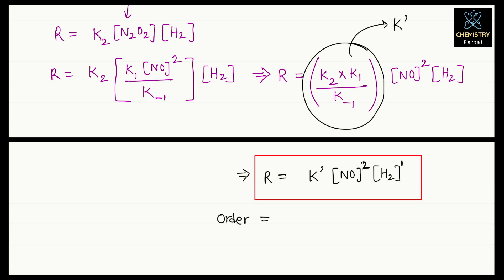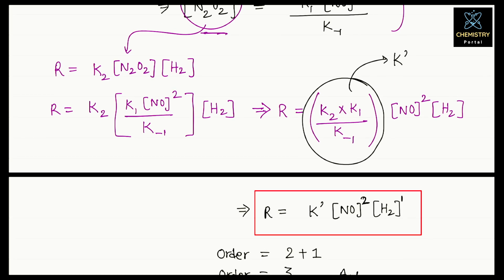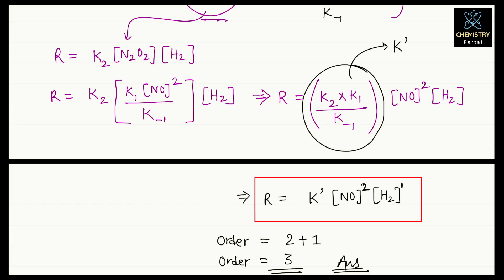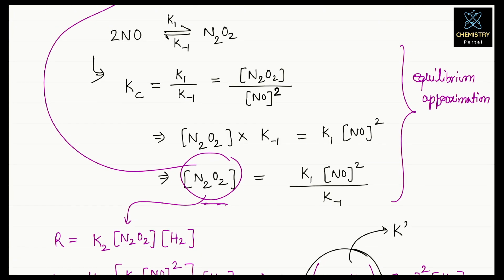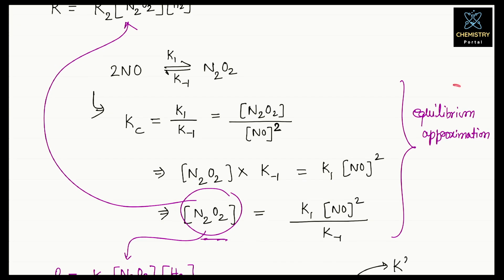Now see the order. The power of [NO] is 2 and the power of [H₂] is 1, so the final order of the reaction is 2 + 1 = 3. This is your answer. The concept used here is equilibrium approximation.